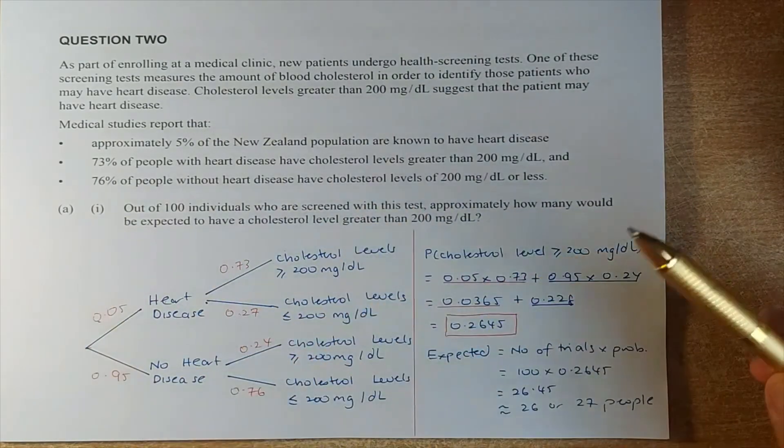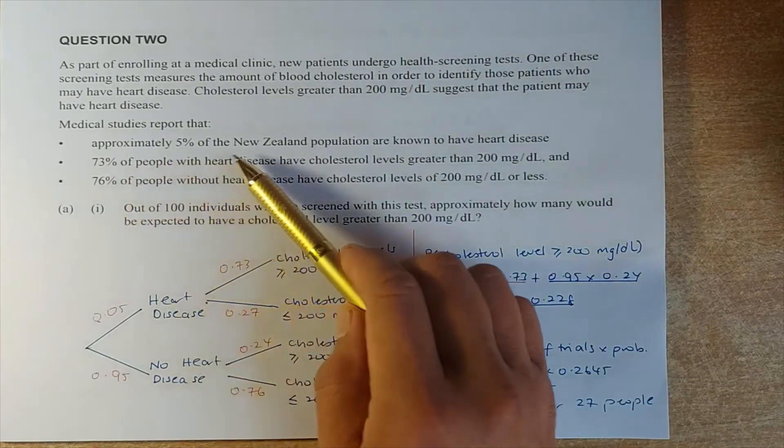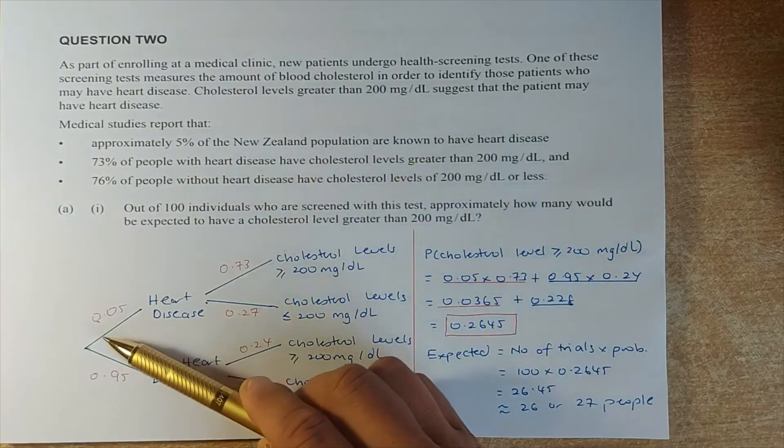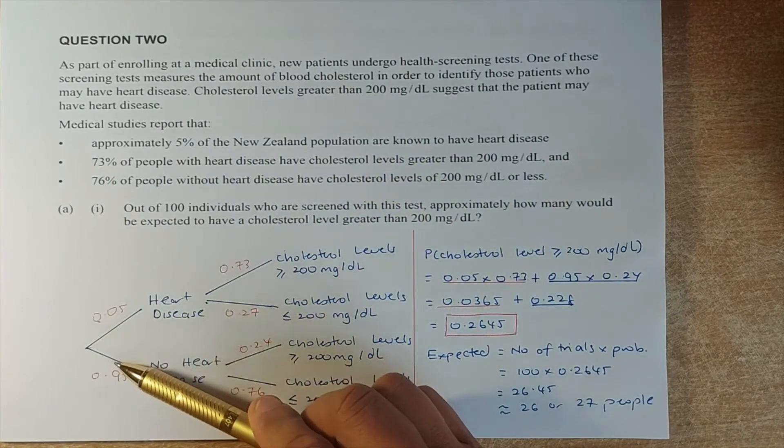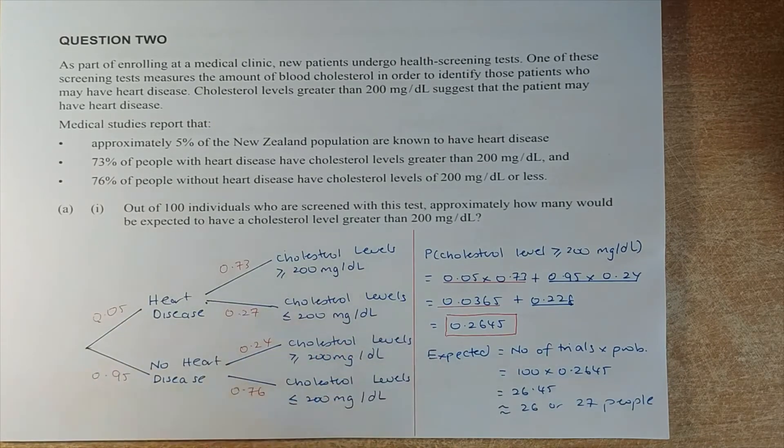Okay, once we have this probability tree, we are going to put in the numbers. So approximately 5% of the New Zealand population are known to have heart disease. So heart disease is 0.05. Not heart disease is 1 minus 0.05 is 0.95.